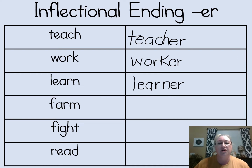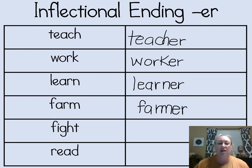Our next word is farm: F-A-R-M. Let's add the E-R ending to the end of it, and we get a noun — a person. And now we have farmer. A person who farms.